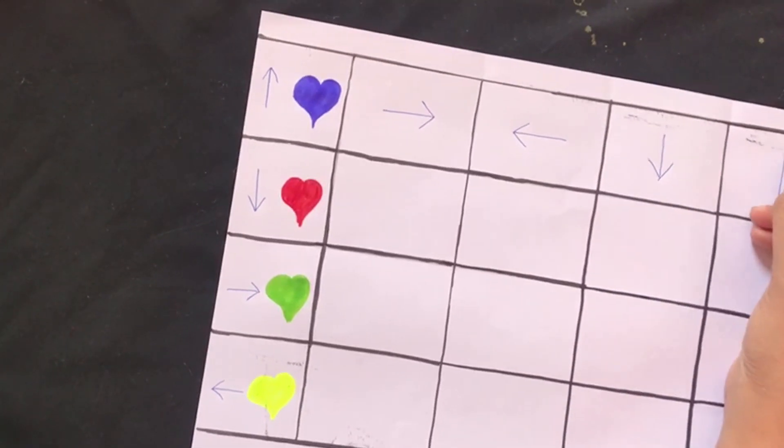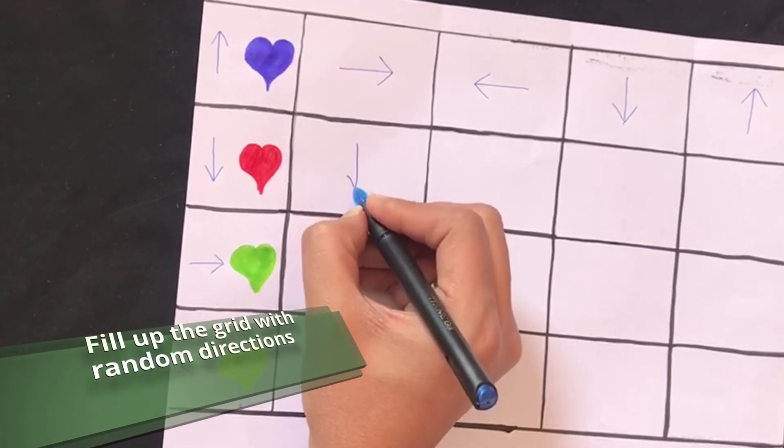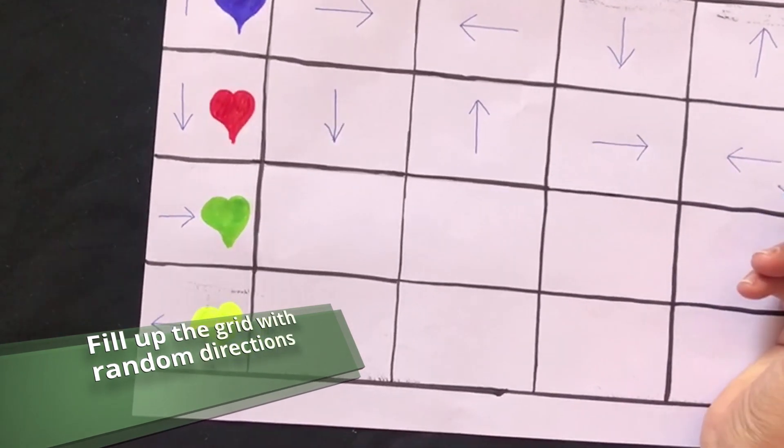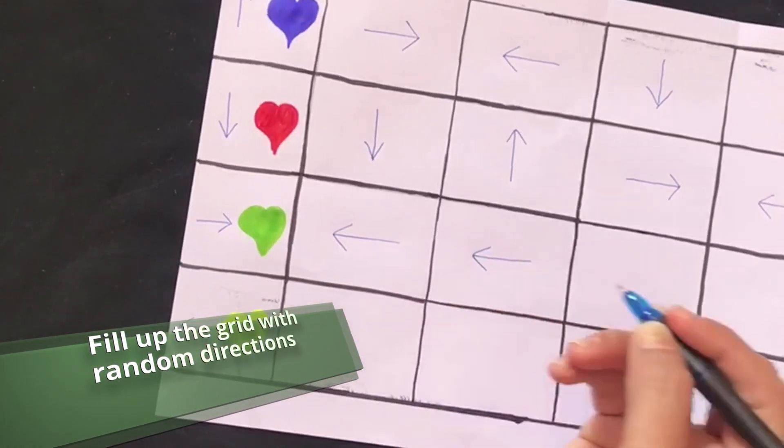Fill in the boxes randomly with any of the four directions you drew in the margin. It can be an up arrow, it can be a down arrow or a side arrow.